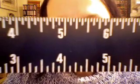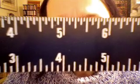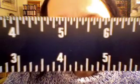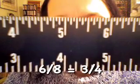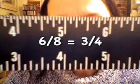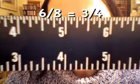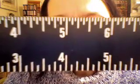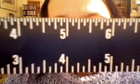Likewise, if you reduce the fraction 6 eighths, you get 3 fourths. So if you go over 6 marks on the bottom, we're talking about the bottom one that's divided into eighths, then you have 3 fourths.